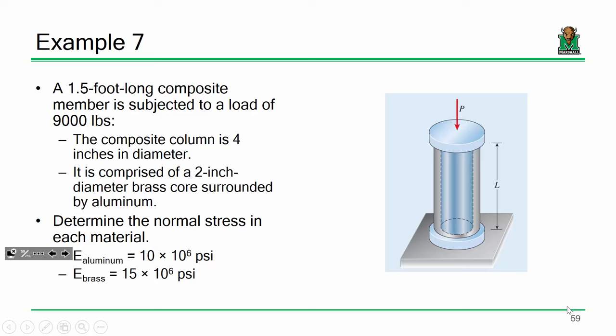No calculus in this problem — constant load and constant area mean no integration needed. Even though it's a composite column and it's indeterminate, we don't need calculus. The column is one and a half feet long, subjected to a load of 9,000 pounds. The whole column is four inches in diameter with a two-inch brass core surrounded by aluminum. I've provided the Young's modulus for each material — E = 15×10⁶ psi for brass and E = 10×10⁶ psi for aluminum. We want to determine the stress in each material.